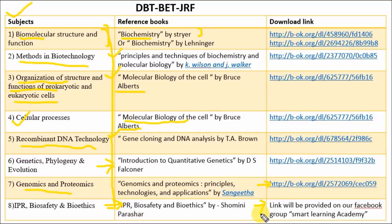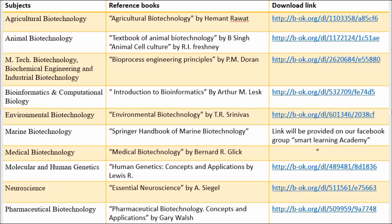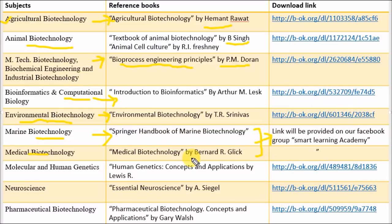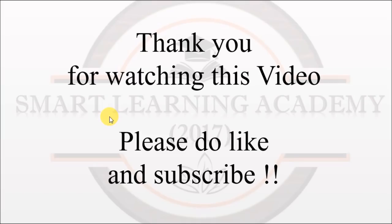The specialized section for DBT-JRF Part B covers the following areas. For Agricultural Biotechnology, refer Agricultural Biotechnology by Hemant Rawat. For Animal Biotechnology, refer Textbook of Animal Biotechnology by B. Singh. For M.Tech Biotechnology / Biochemical Engineering, refer Bioprocess Engineering Principles by P.M. Doran. For Bioinformatics and Computational Biology, refer Introduction to Bioinformatics by Arthur Lesk. For Environmental Biotechnology, refer Environmental Biotechnology by T.R. Srinivas. For Marine Biotechnology, refer the Springer Handbook of Marine Biotechnology. For Medical Biotechnology, click the link provided on the Facebook group. For Molecular and Human Genetics, refer Human Genetics by Lewis — download links provided. For DBT-JRF practice, refer previous year question papers. Thank you for watching — if you like this video, please like and subscribe.